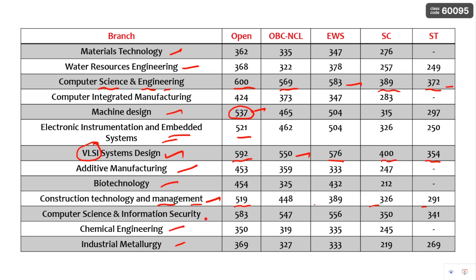Other branches like Chemical, Industrial, Computer Science, and Information Security are also shown — you can pause the video to go through all the cutoffs. It took me four to five hours to tabulate these category-wise cutoffs from each round of CCMT. Please subscribe to my channel, share with your friends, and click the bell icon for updates. Telegram channel links for CCMT and COAP are in the description. Comment below if you have any questions — thank you for watching.